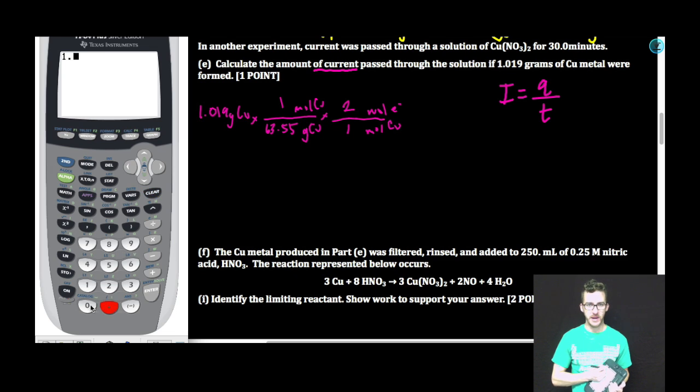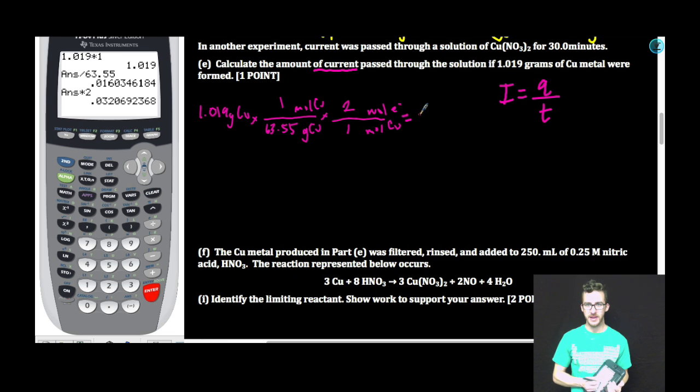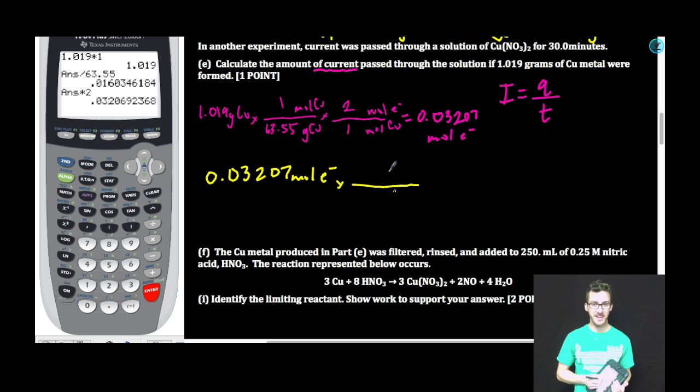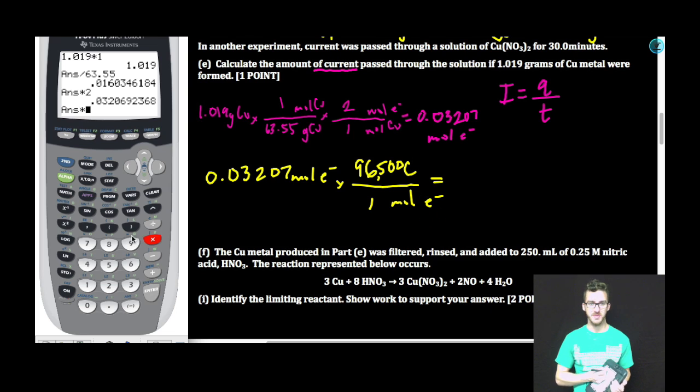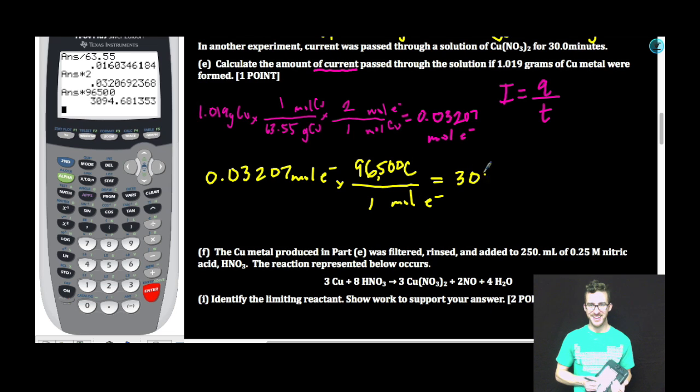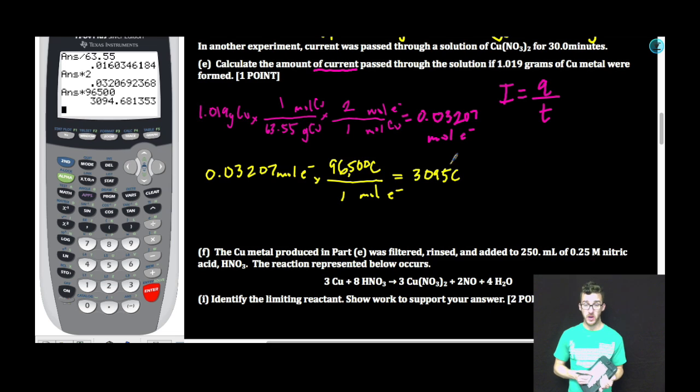So by converting to moles of copper, my next step is then to convert to moles of electrons. And for copper 2, it takes 2 moles of electrons to form 1 mole of solid copper. Calculator time! We get 0.03207 moles of electrons. Now, if we have 0.03207 moles of electrons, recognize that Faraday's constant, which relates charge to moles of electrons, will get us to coulombs. So I now know how much charge was passed through the solution. We're also told how long that charge was passed through the solution for. However, recognize that it's given to us in minutes.